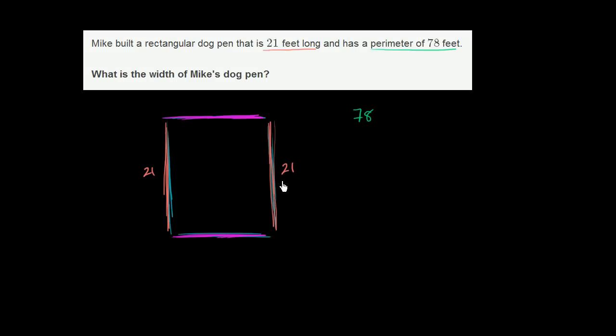we're going to get 78 feet. So let's at least subtract these two orange lengths, the two 21 feet, from the 78 feet. And then we figure out how much length these two widths have to make up. So let's subtract. Let's do 78 minus 21 minus 21.